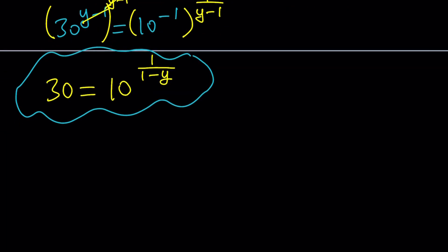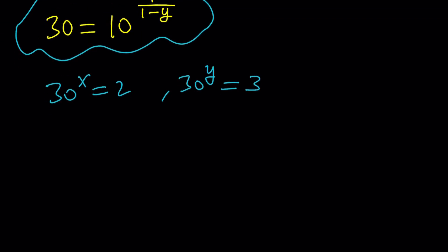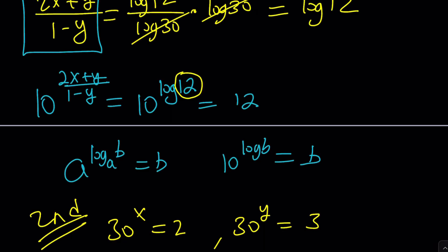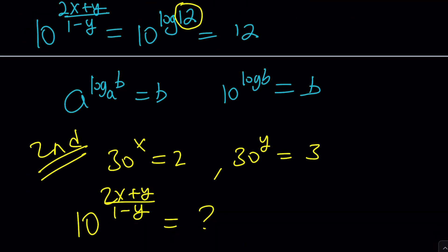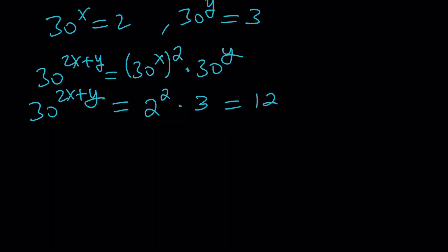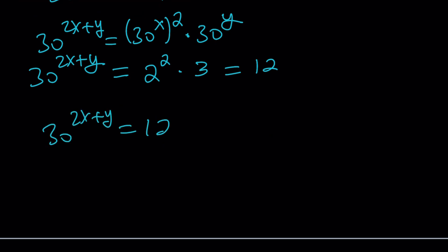Now, taking 30 to the power x equals 2 and 30 to the power y equals 3, let's evaluate 30 to the power 2x plus y. This equals 30 to the power x, squared, times 30 to the power y. Since 30 to the power x equals 2, this gives 2 squared times 3, which equals 12. So 30 to the power 2x plus y equals 12.